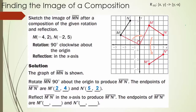After the rotation, we reflect across the X-axis. Algebraically, you take your X and Y and change the sign of the Y value. Reflecting M' gives us M'' at (2, -4) — the opposite of the Y value. And N'' is at (5, -2) — the opposite of 2.